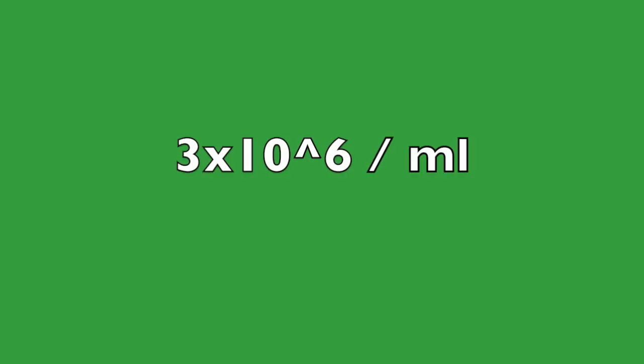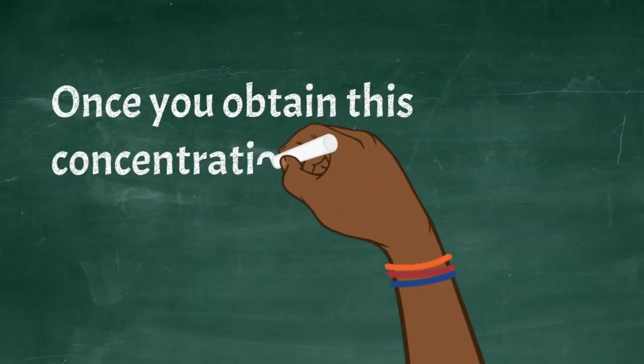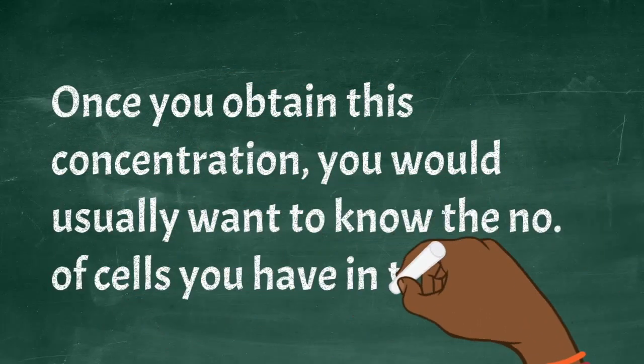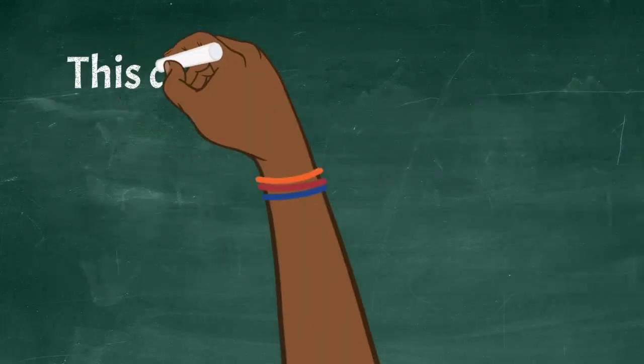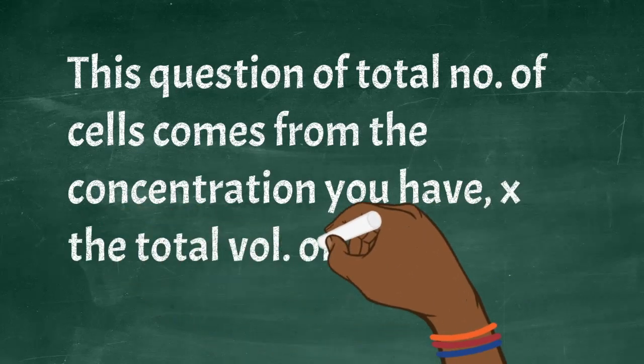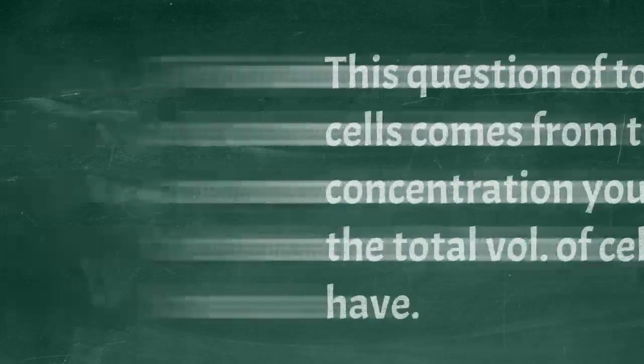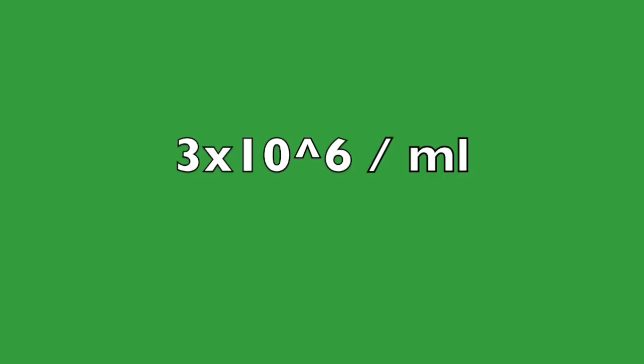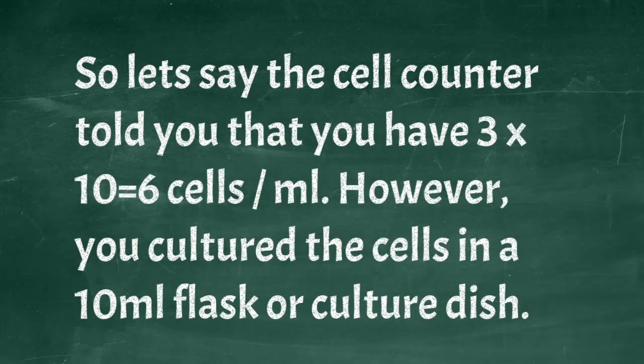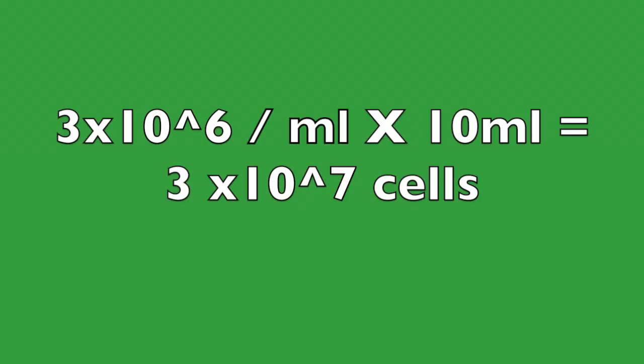For example, 3 by 10 to the 6 cells per ml. Once you obtain this concentration, you would usually want to know the number of cells you have in total. The total number of cells comes from the concentration you have multiplied by the total volume of cells you have. So if the cell counter told you that you have 3 by 10 to the 6 cells in every ml, and you cultured the cells in a 10 ml flask, that gives you 30 million cells or 3 by 10 to the 7 in scientific notation.